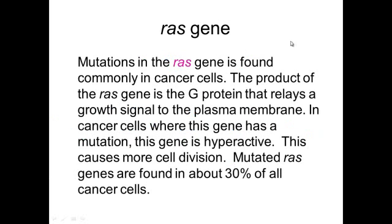There are also two other specific mutations found in many cancer cells. The first one is called the RAS gene. The RAS gene is found in about 30% of all cancer cells — they have a mutation in the RAS gene.